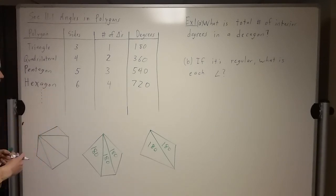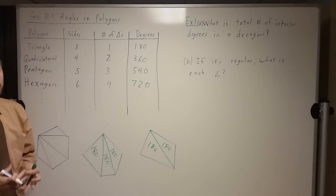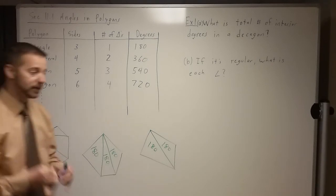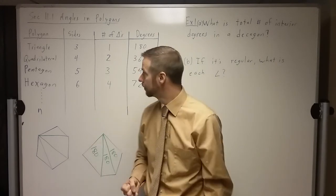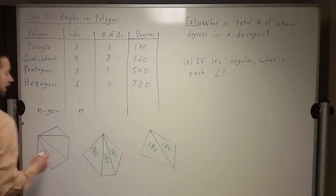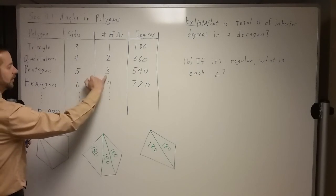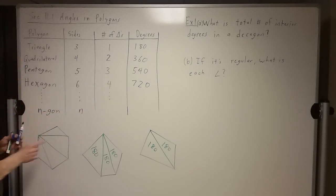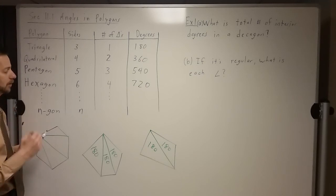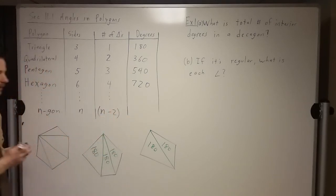We're going to take a little jump here and go general — using a variable. So we're saying if it has n sides, or if it's an n-gon, it would have n sides. Let's think about how many triangles that would make. Three sides: one triangle. Four sides: two triangles. Five sides: three triangles. Six sides: four triangles. Do you notice the number of triangles is always two less than the number of sides? So this would be n minus two for our number of triangles.